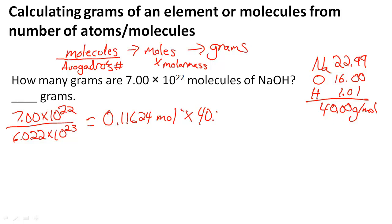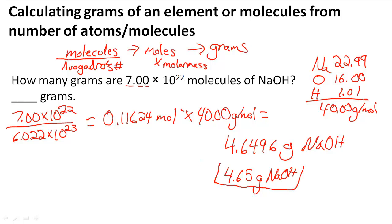So I'm going to multiply 0.11624 by 40.00 grams per mole and I'm going to get 4.6496 grams of NaOH. We know that we have to have three significant digits because that's what we started out with. So it's going to be 4.65 grams of NaOH which is the answer to this problem.